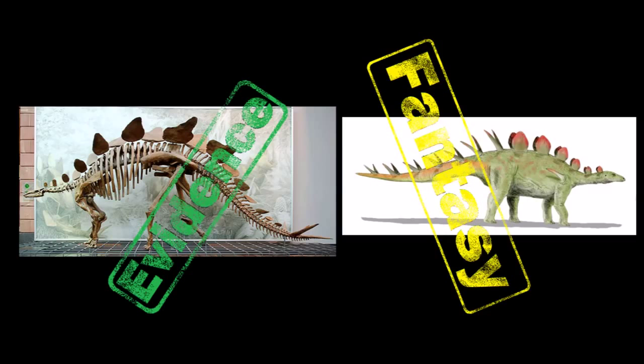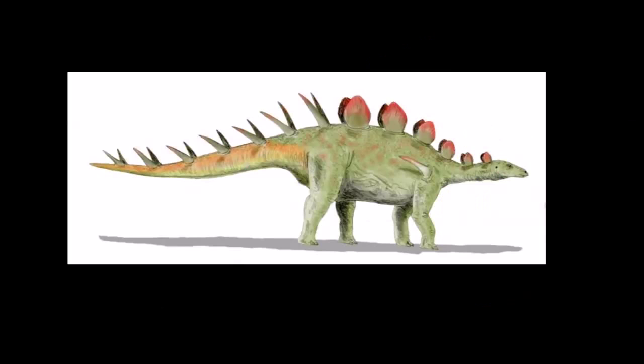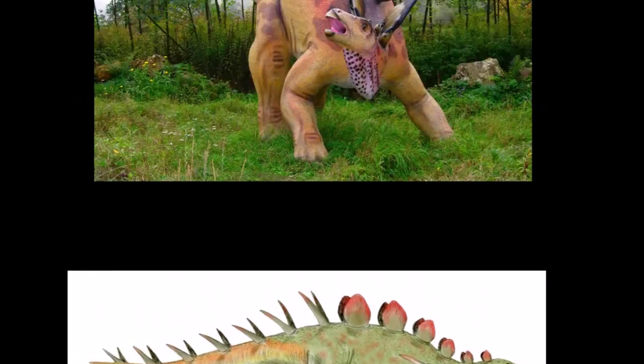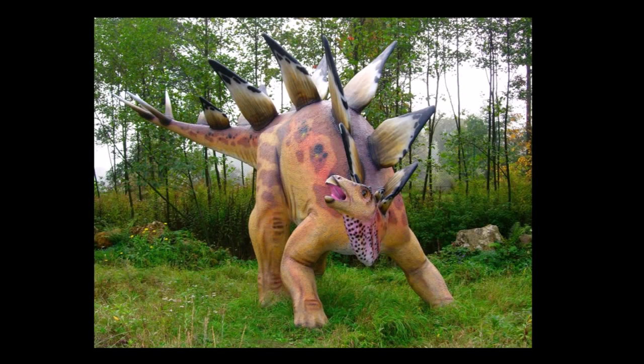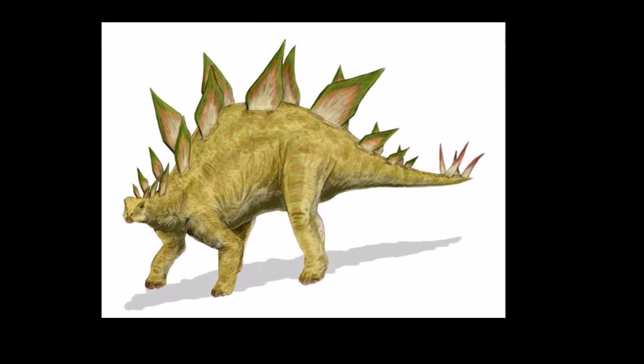For example, we don't know what the color of this creature was. It may have been green, or yellow with purple, or grey, or brown.